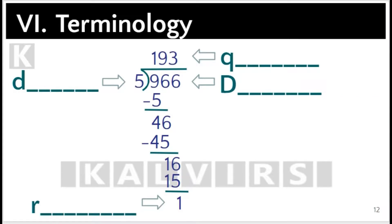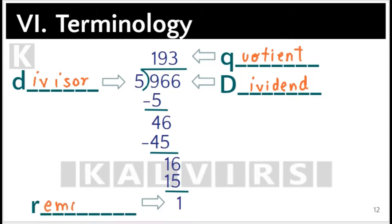The division terminology is as follows: 966 is the dividend, 5 is the divisor, 193 is the quotient, and 1 is the remainder. Thus it is true that the dividend equals the divisor times the quotient plus the remainder.